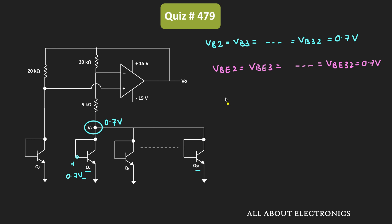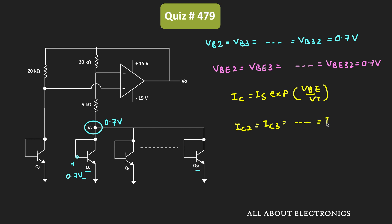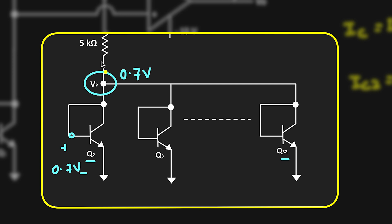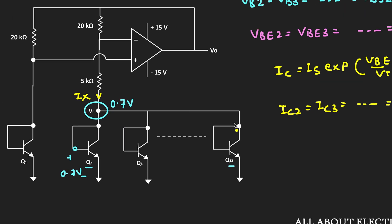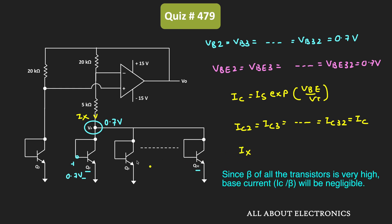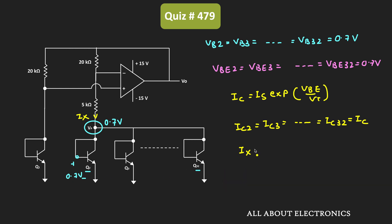We have been given that the relationship between the collector current and the base emitter voltage is IC = IS × e^(VBE/VT). For transistors Q2 to Q32, since the base emitter voltage is equal to 0.7V, the collector current from all these transistors will remain the same — let's call it IC. Now let's say the current through this branch is equal to IX. By applying KCL, this current IX is the summation of all the collector currents from Q2 to Q32, which equals 31 times IC. This is equation number 1.